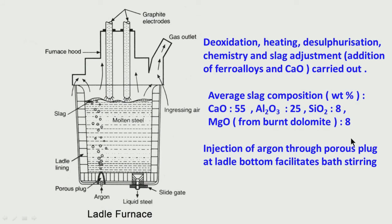Then I have talked about the ladle furnace — how deoxidation, heating, desulfurization, and adjustment of slag and chemistry of the steel are all possible. The average slag composition is approximately 55 percent CaO, SiO₂ is much less, so the basicity ratio is quite high. Some MgO is coming from the burnt dolomite in the refractory lining. Injection of argon gas through a porous plug at the bottom helps in bath stirring and faster removal of inclusions from the bulk of the liquid steel to the surface, where they get absorbed by the slag.